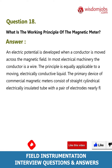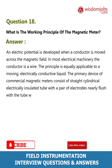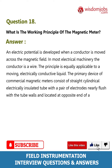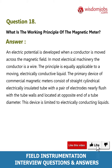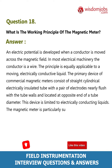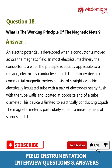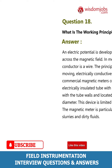The tube has a pair of electrodes nearly flush with the tube walls, located at opposite ends of a tube diameter. This device is limited to electrically conducting liquids. The magnetic meter is particularly suited to measurement of slurries and dirty fluids.